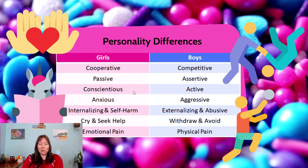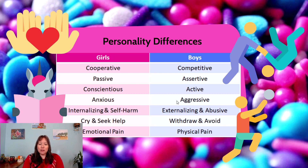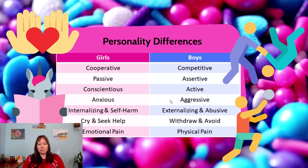When frustrated, girls are more likely to be anxious, to internalize, and unfortunately to self-harm. Boys can also internalize, but compared to girls, boys are more likely to externalize — to be aggressive and hurt others. We have to acknowledge the major role society plays here: something in our culture tells girls it's okay to hurt themselves, and tells boys it's okay to hurt others. That's a serious problem. It's striking how one tends toward internalizing and the other toward externalizing.